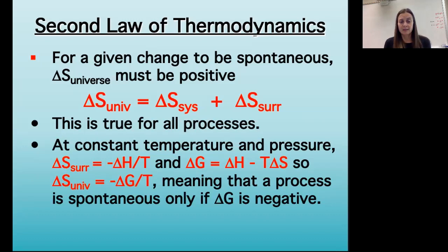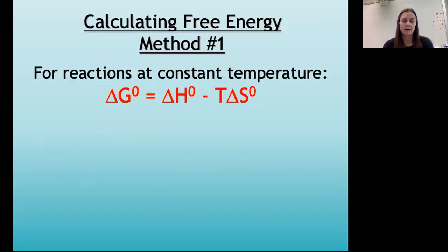We can put all of this together and write an equation for free energy. That free energy is given the symbol G for Gibbs free energy, named for the person who proposed it. The change in free energy — if that is negative, then the process will be spontaneous. We write this as the Gibbs free energy equation: delta G of the reaction equals delta H, the change in enthalpy, minus the entropy of the reaction times the temperature in Kelvin. So delta G equals delta H minus T delta S.